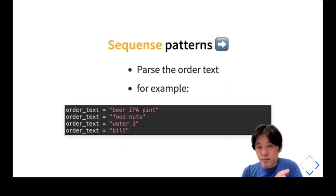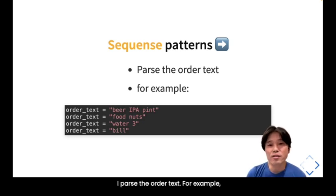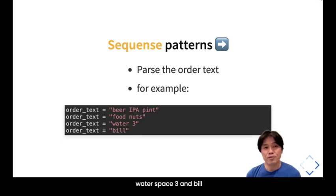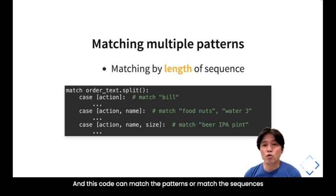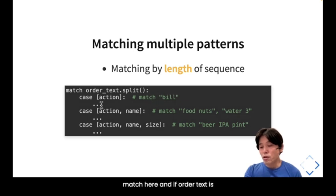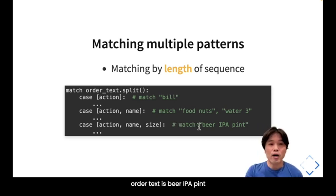Next, sequence patterns. Here I pass order text as a list — for example, ['beer', 'IPA', 'pint'] or ['food', 'nuts'] or ['water', '3'] or ['beer']. The code can match patterns of multiple sequence lengths: a list of length one, two, or three. If order_text is ['beer'], it matches the single-element pattern. If ['food', 'nuts'], it matches the two-element pattern. If ['beer', 'IPA', 'pint'], it matches the three-element pattern.